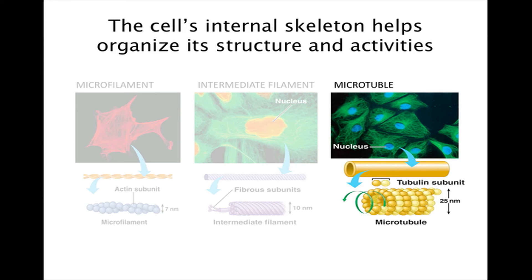Microtubules are straight, hollow tubes composed of globular proteins called tubulin. Microtubules elongate by adding tubulin subunits. In many animal cells, microtubules grow out from a microtubule organizing center called a centrosome. Within the centrosome is a pair of centrioles. Microtubules shape and support the cell and also act as tracts along which organelles equipped with motor proteins can move.